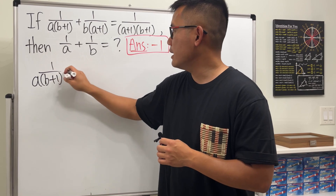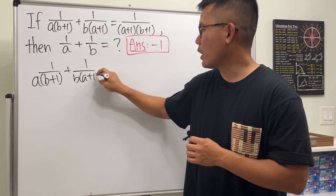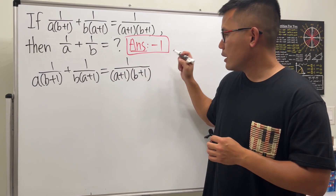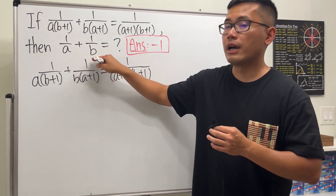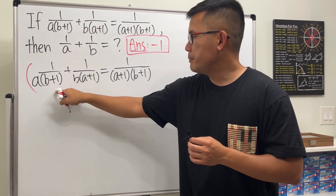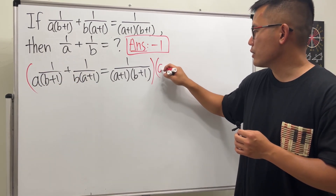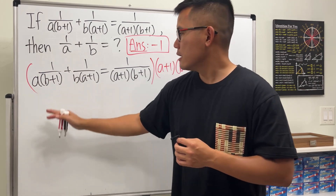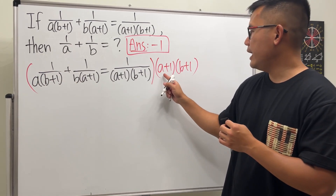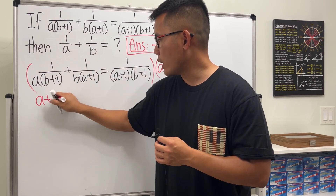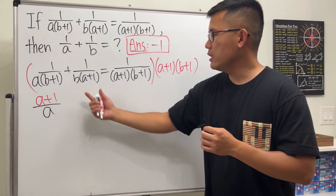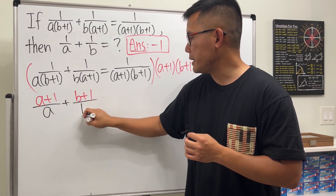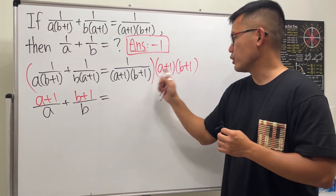We have 1/(a(b+1)) + 1/(b(a+1)) = 1/((a+1)(b+1)). Since we're looking for 1/a + 1/b, let's multiply everybody by (a+1)(b+1). When we take the first term times that, the (b+1) cancels and we get (a+1)/a. Similarly, the (a+1) cancels on the second term, leaving (b+1)/b. The right-hand side becomes just 1 because both cancel out.